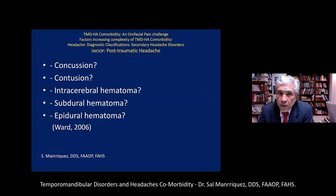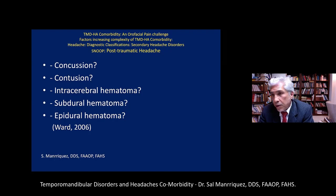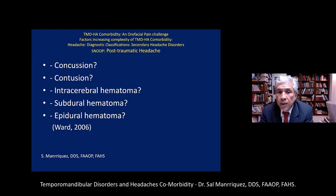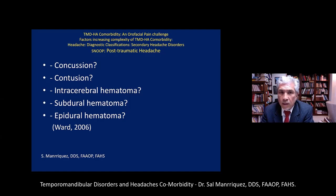Post-traumatic headache is another cause. Key considerations include: did the patient suffer a concussion? Trauma could be a car accident, falling off a bicycle, or getting hit in the head. For athletes who experience repeated head trauma — basketball or volleyball players — does that lead to concussion, brain contusion, intracerebral hematoma, or subdural/epidural hematoma? These conditions clearly need to be managed by a neurologist.